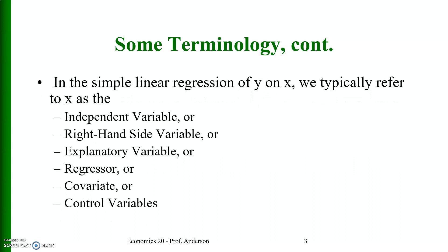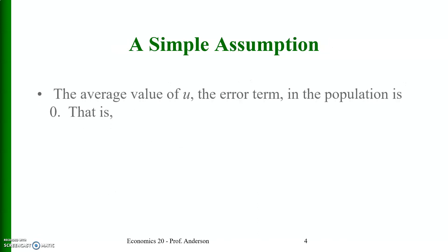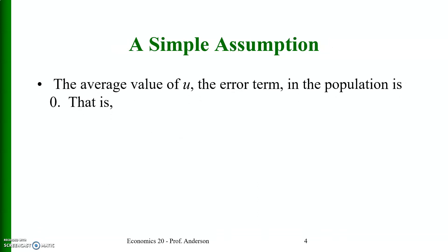Similarly, in simple regression of y on x, we refer to x as the independent variable. It is also known as the right-hand side variable, explanatory variable, regressor, covariate, or control variable.